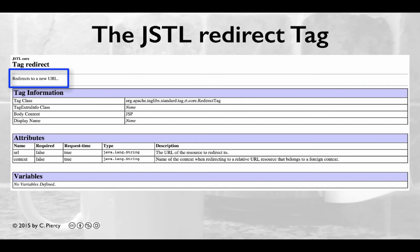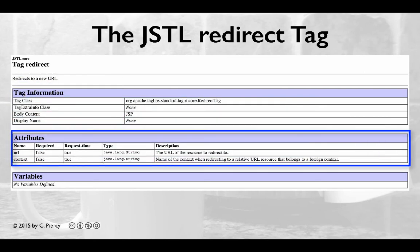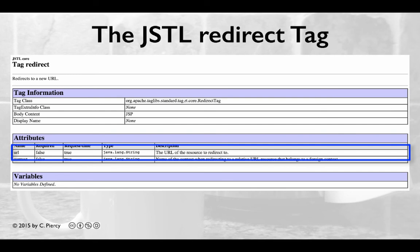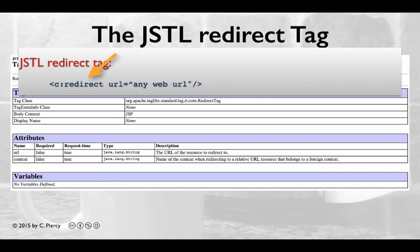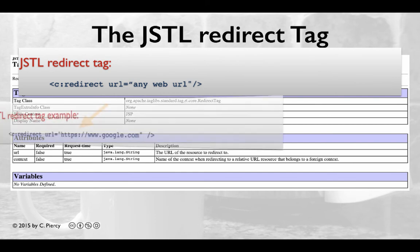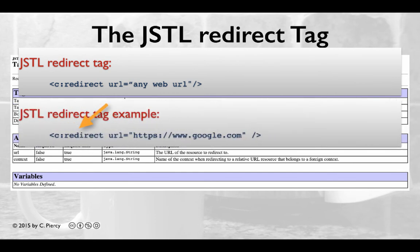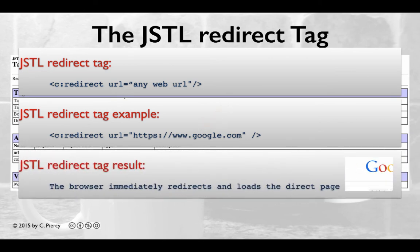The JSTL core redirect tag can be used to create a pointer to which the browser would be redirected when this tag is implemented. Note that it has only two attributes: the URL, which is the resource where we're going to redirect to, and the context. The most commonly used format is to simply provide the URL attribute for the tag. In this example, we've created a redirect tag that will redirect the browser to the Google homepage, and the result is that the browser will immediately redirect and load that page.